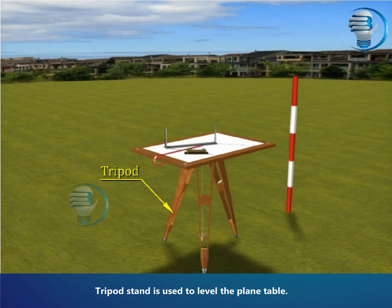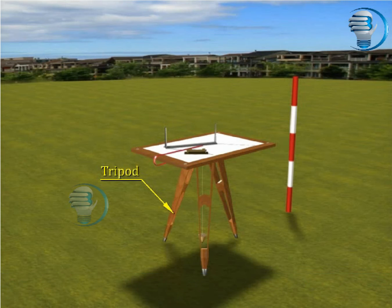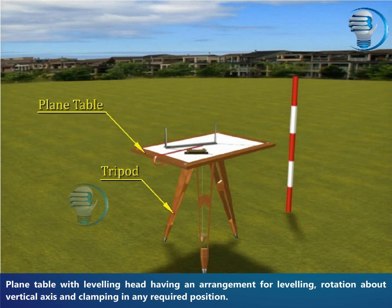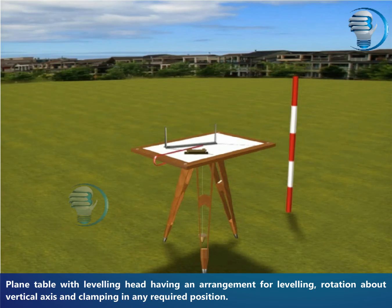Tripod stand is used to level the plane table. The plane table has a leveling head with an arrangement for leveling, rotation about vertical axis, and clamping in any required position.